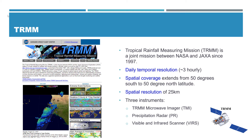It has three instruments: the first one is the TRMM Microwave Imager, TMI; the second one is Precipitation Radar, PR; and the third one is VIRS, the Visible and Infrared Scanner. That's some background information about the TRMM mission.